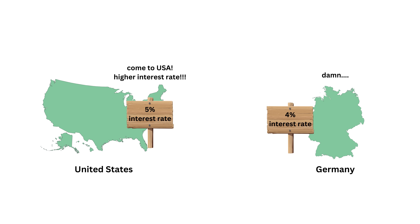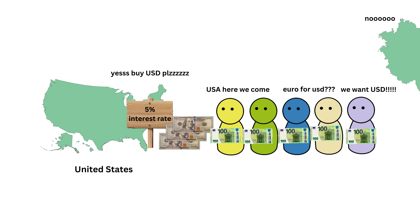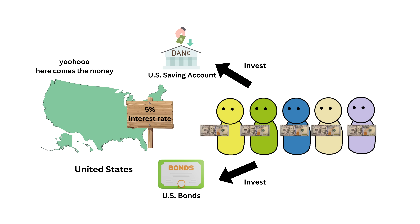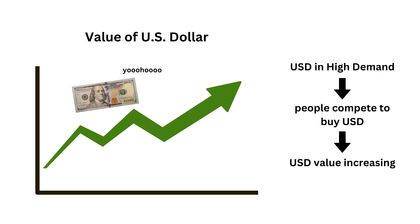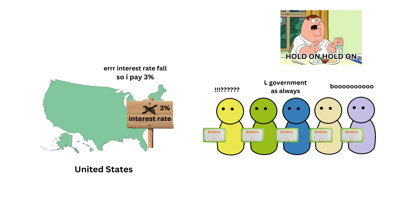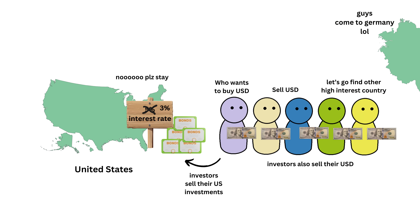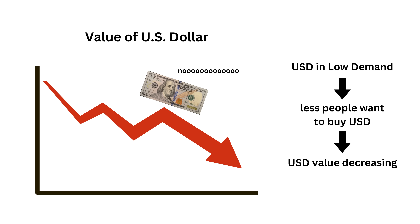So, if the interest rate in the U.S. is higher than in Germany, investors might sell their euros and buy U.S. dollars to invest in American bonds or savings accounts with higher returns. This increased demand for U.S. dollars strengthens the currency. On the other hand, if U.S. interest rates are falling, it offers lower returns, and investors might look elsewhere. This reduces demand for U.S. dollars, causing its value to decrease.